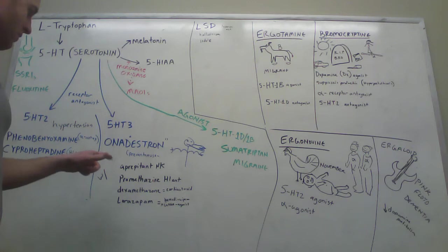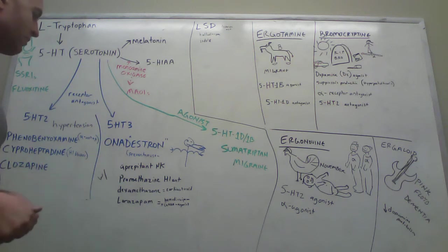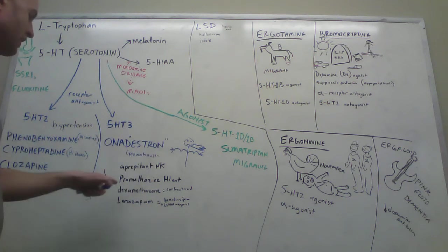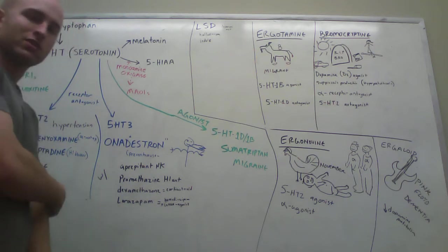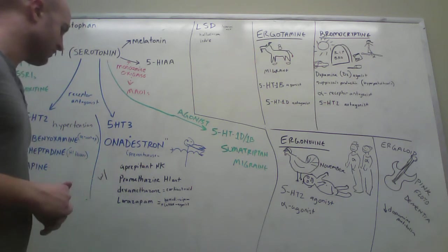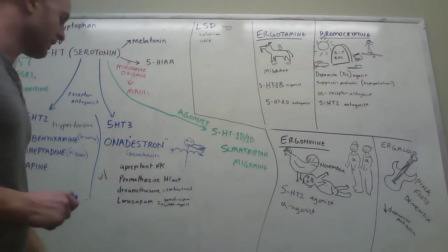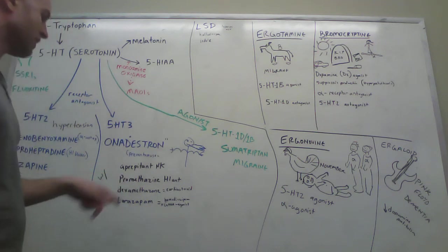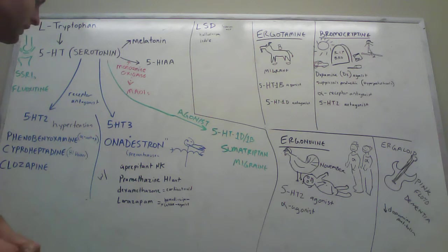Now you have some things that you typically take with ondansetron to prevent nausea. A lot of times you'll take aprepitant, which is NK1, associated with NK1, not associated with pain. You can take promethazine, which we talked about earlier. Promethazine is an H1 antagonist, first-generation antihistamine.